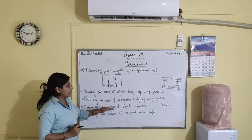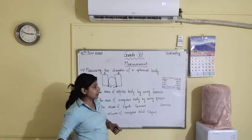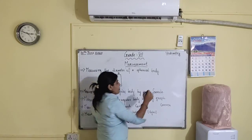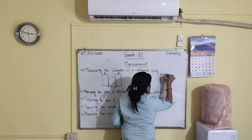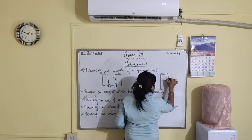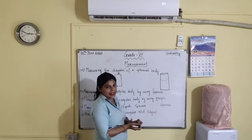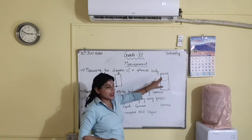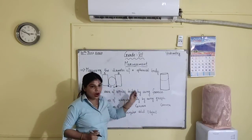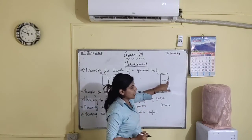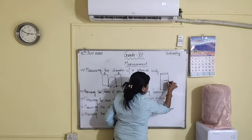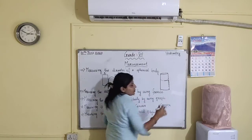Now, measuring the volume of liquids. There are two kinds of liquids. First, the liquid that wets the glass surface. For this, you need to take a measuring cylinder. Put the water in the measuring cylinder. You can see the shape of the water will be a little bit depressed inside the center. This shape is known as the concave shape. Liquids like water, spirit, oil, and kerosene give a concave shape in the cylinder. For that, you have to see the lower meniscus. The measurement at the lower meniscus will give the volume of the liquid.